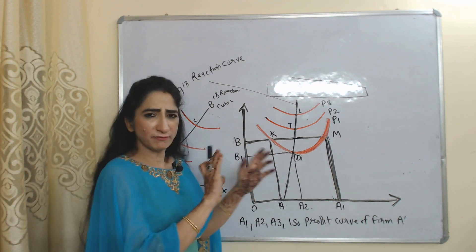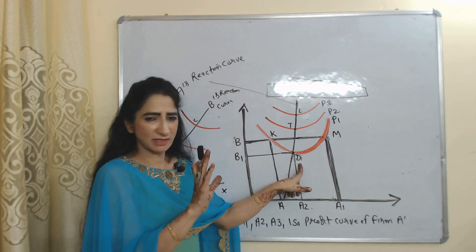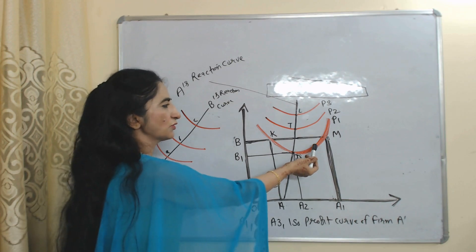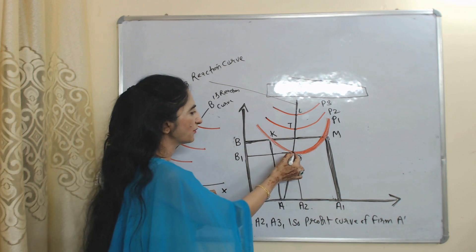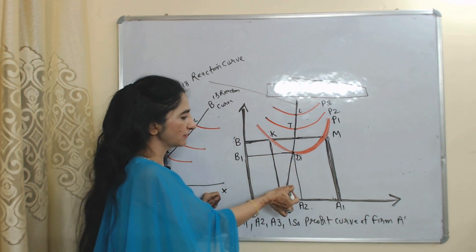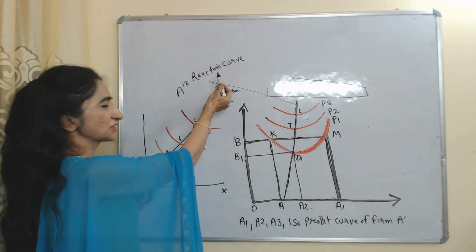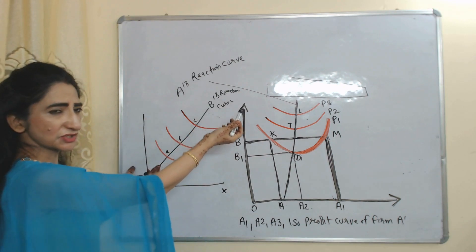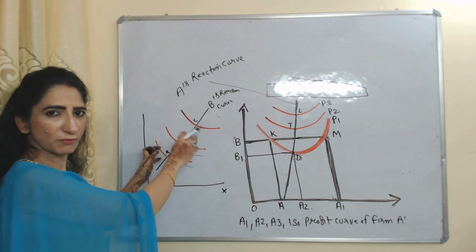At point D, firms will not compete with each other, so this will be called the stable equilibrium point. When we join the minimum points of all isoprofit curves, we get one line called A's reaction curve. Similarly, we can draw B's reaction curve, and these curves show the isoprofit curves for firm B.